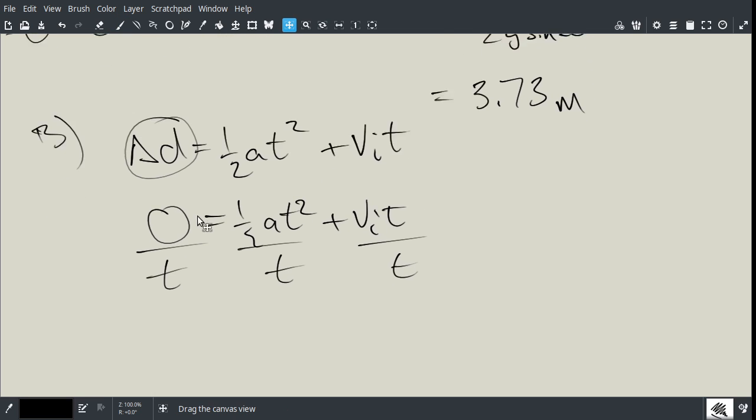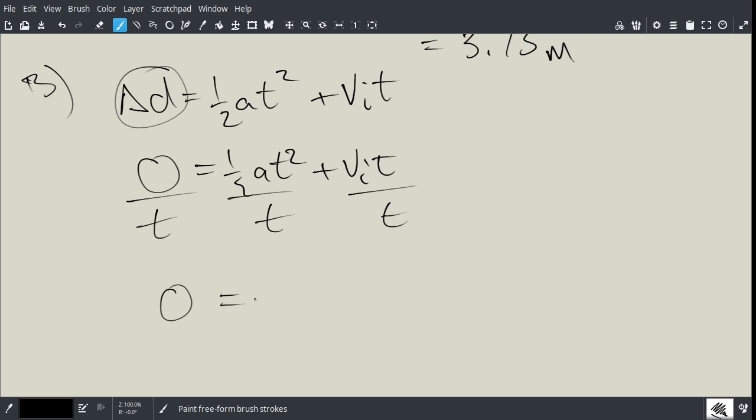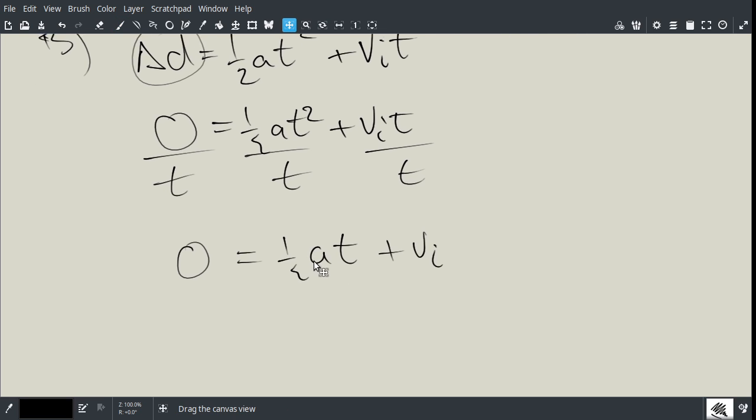And of course, this still becomes 0, this now becomes 1 half at, and this becomes vi. And so now, solving for t, we can just say negative vi, moving that guy over, and we can multiply, take that 1 half, put it the other side, and multiply by 2 divided by a is equal to t.